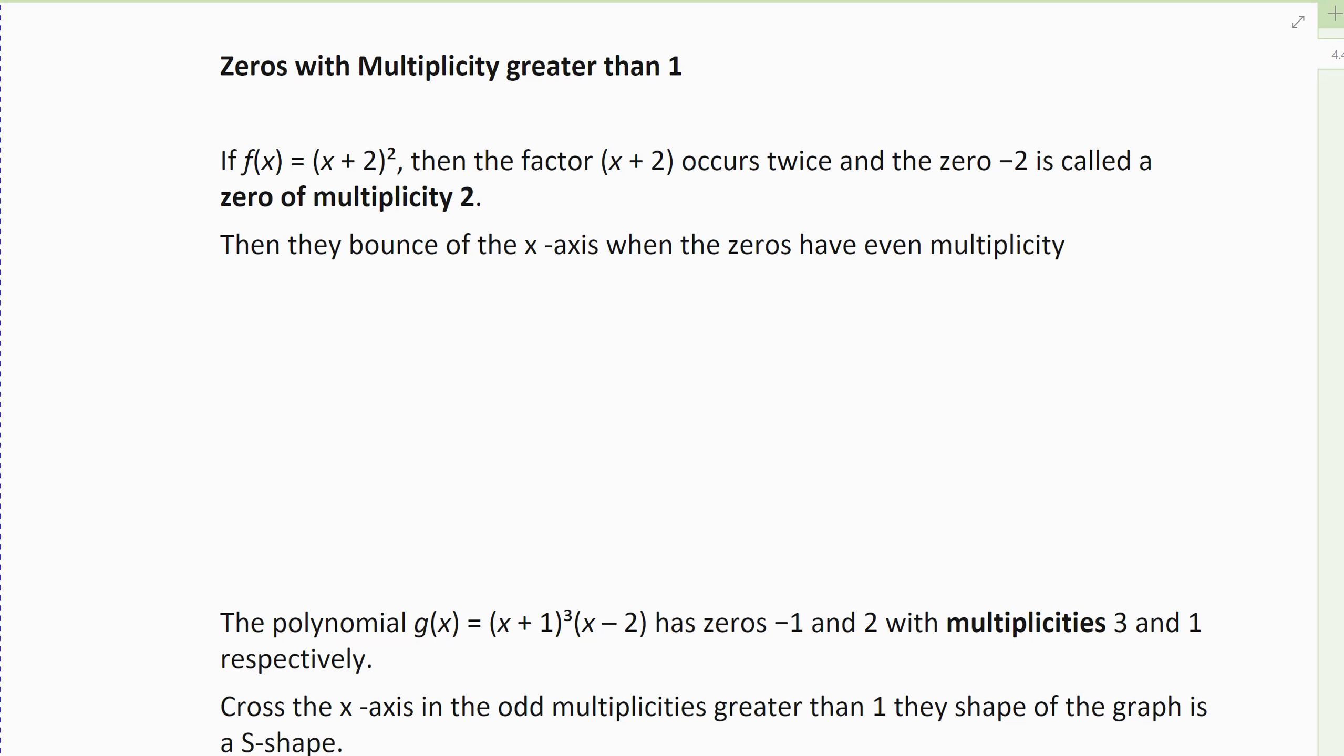So multiplicity means I'm multiplying by the factor more than one time, has a greater multiplicity than one. And it does affect the shape of the graph. The shape of the graph is affected by the multiplicity.